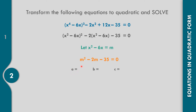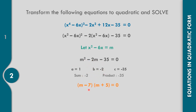Identify A = 1, B = -2, and C = -35. We need factors with product -35 and sum -2. Try -7 × 5: product is -35, correct. Check: -7 + 5 = -2, correct. So the factors are (m - 7)(m + 5) = 0. Solving: m - 7 = 0 gives m = 7, and m + 5 = 0 gives m = -5. So the two values of m are 7 and -5.